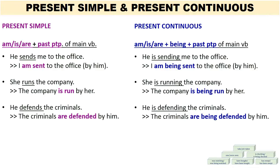Let's take a look at the first sentence: He is sending me to the office. Subject and object switch places: I am being sent to the office by him. So we have 'being' plus the past participle of 'send,' which is 'sent': I am being sent. Second example: She is running the company. The company is being run by her. Again, we have the use of 'being' in its continuous form. We have 'is' because 'company' is a singular noun, and 'run' as the past participle form of our main verb.